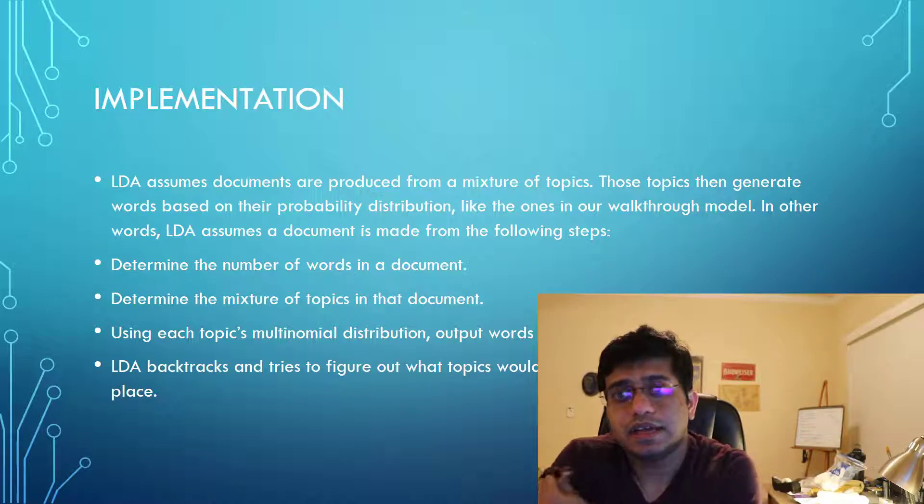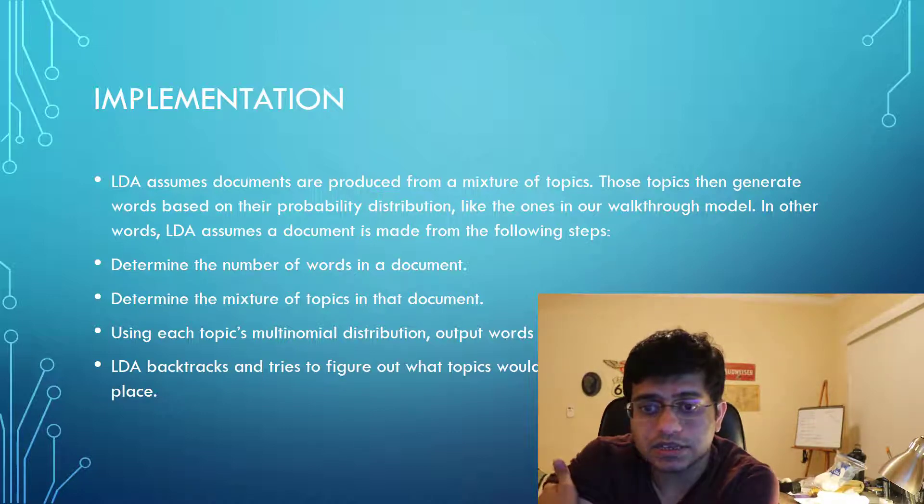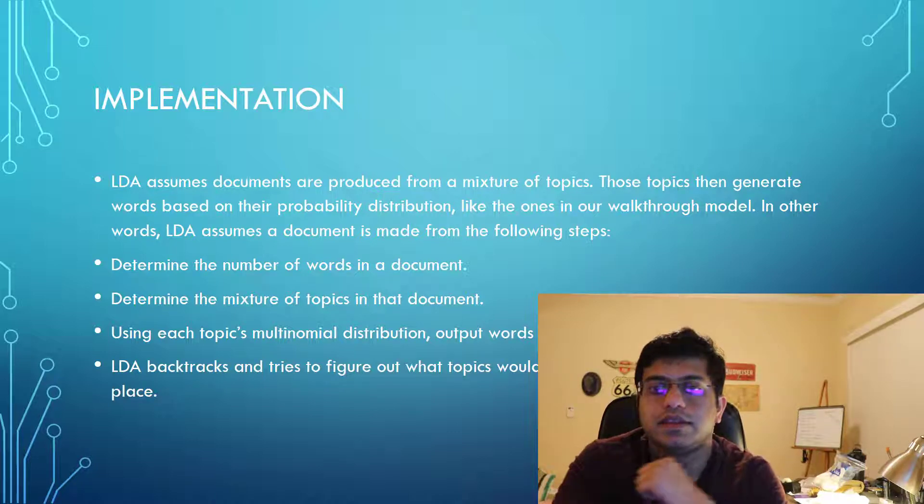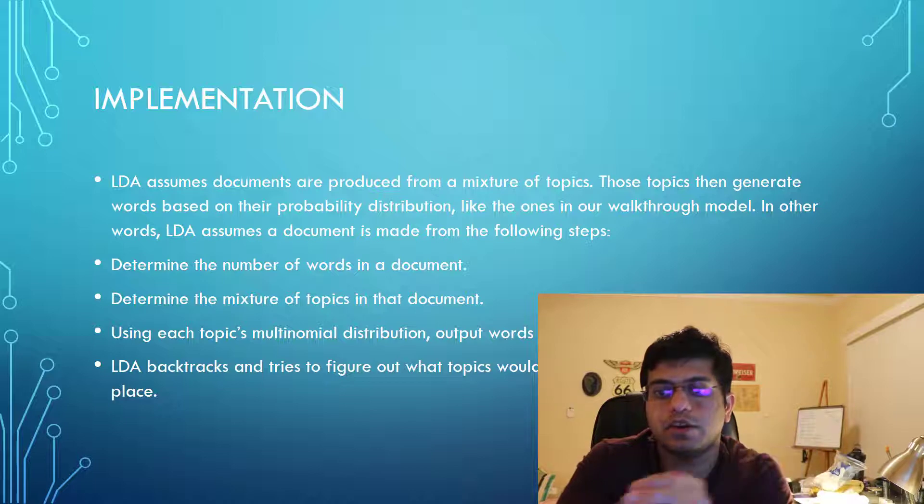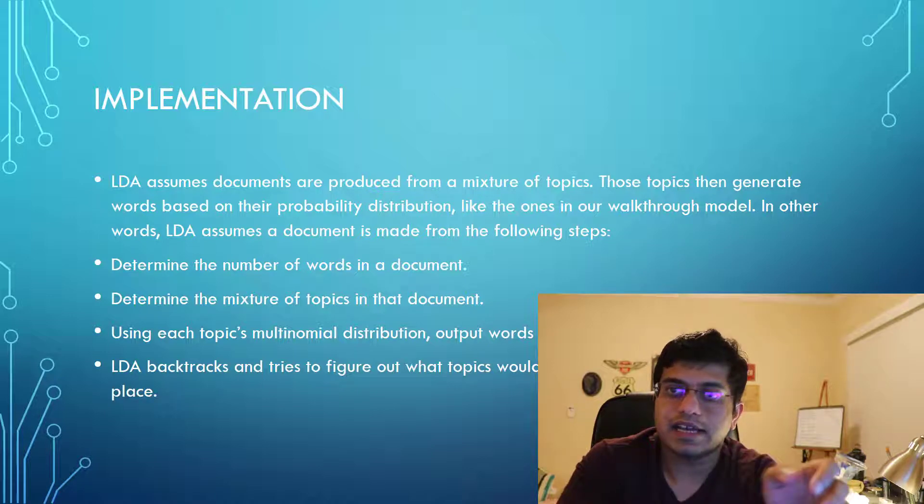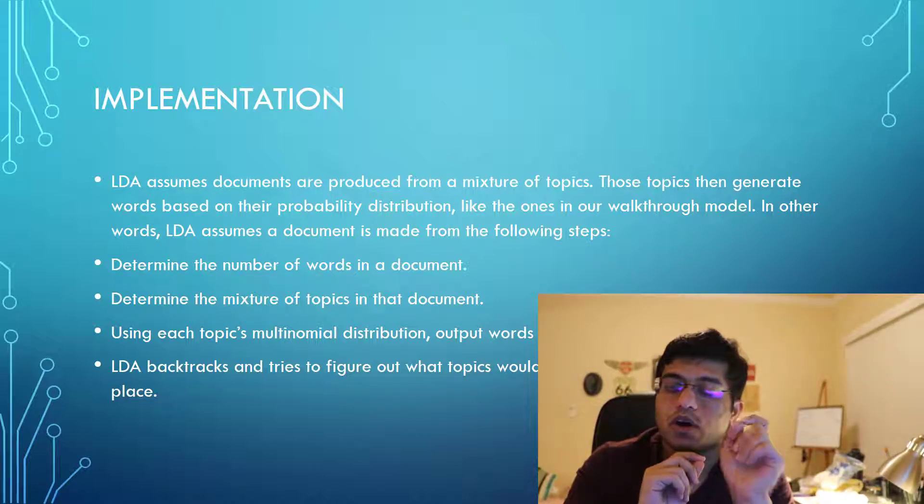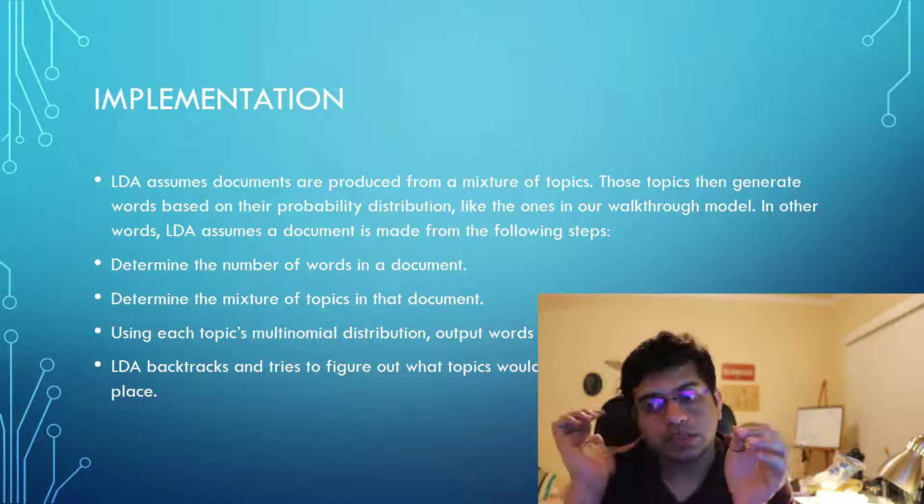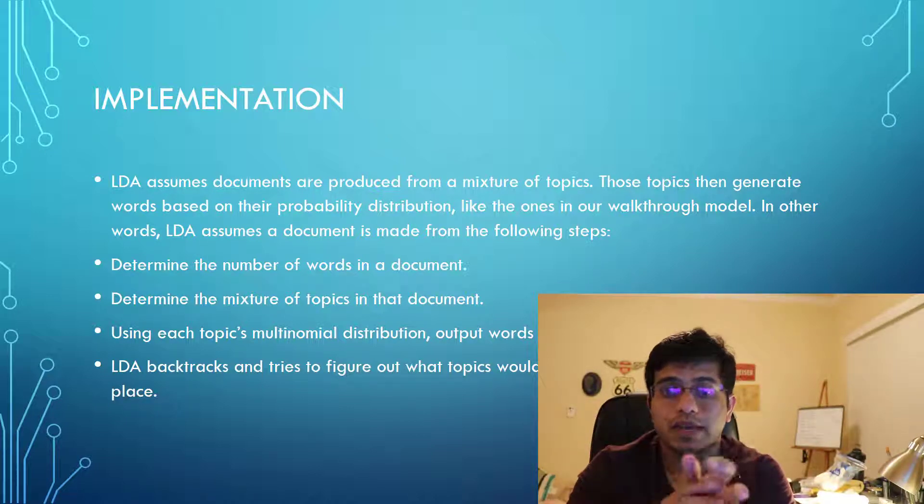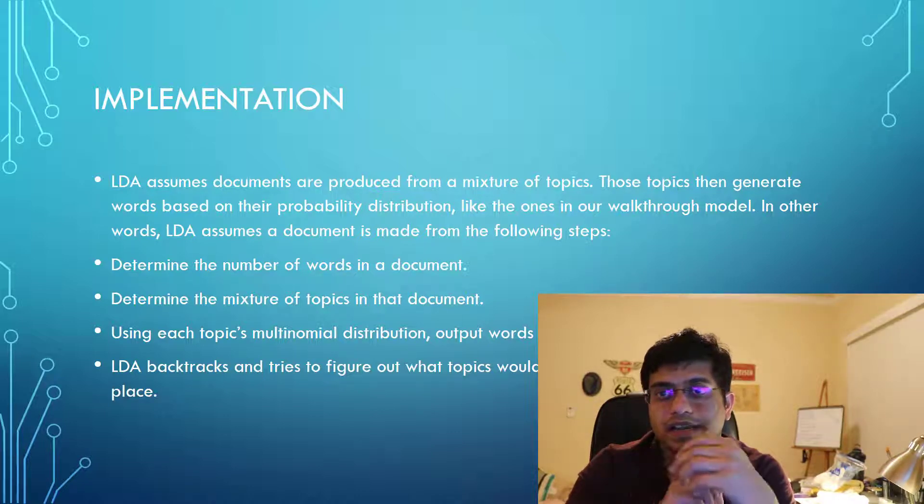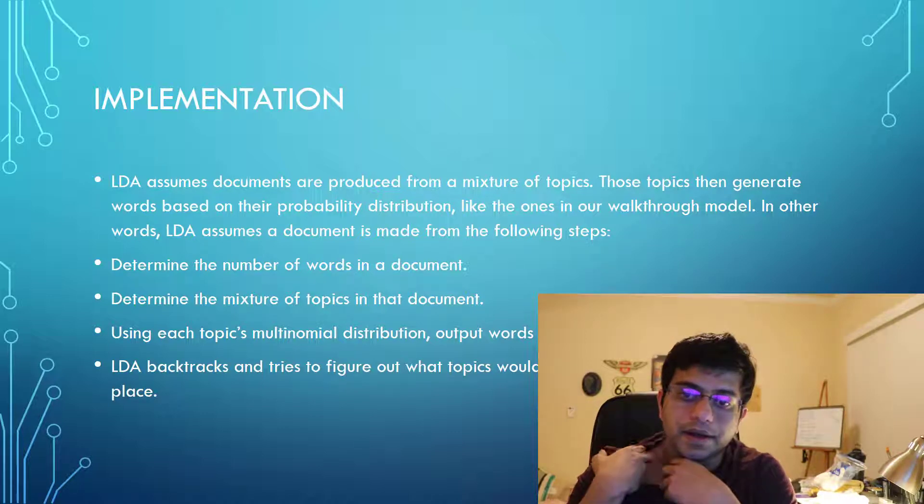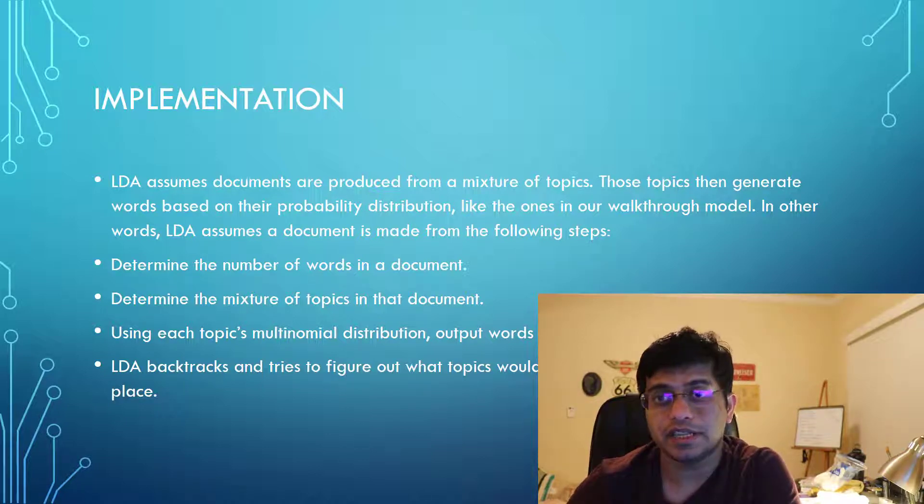How does this backtracking happen? We first pick a topic based on multinomial distribution of document and then word based on distribution of documents and randomly assign each word in each document to one of the key topics. For each document we will find out how many words in document D are associated with a topic and how many topics are associated with the word, and based on that we will assign each new word a topic.